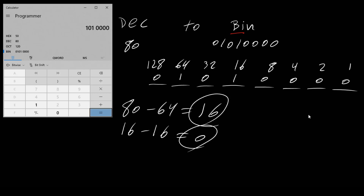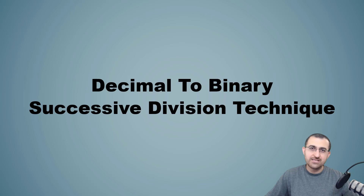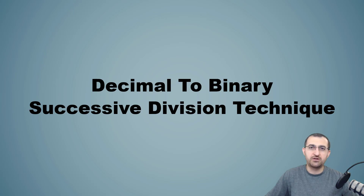This was an example of converting a decimal value to a binary number using the place value position technique. In the next section, we will talk about how we can convert a decimal number to a binary number using the successive division technique. We will use the same decimal number we used earlier: 357.